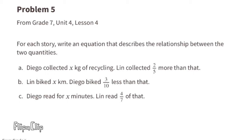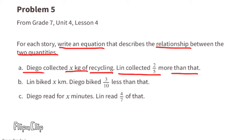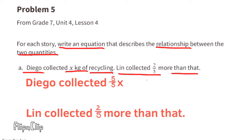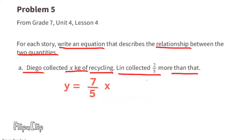Problem number five, from seventh grade unit four lesson four — for each story, write an equation describing the relationship between the two quantities. Story A: Diego collected x kilograms of recycling; Lynn collected two-fifths more than that. Diego collected five-fifths x, and Lynn collected two-fifths more, so five-fifths x plus two-fifths x equals seven-fifths x. The equation is y equals seven-fifths x, where y is Lynn's recycling and x is Diego's.